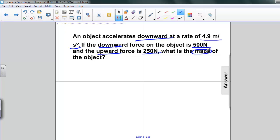Let's write down our numbers here. We have two forces. F1, which is downward, is minus 500 newtons.